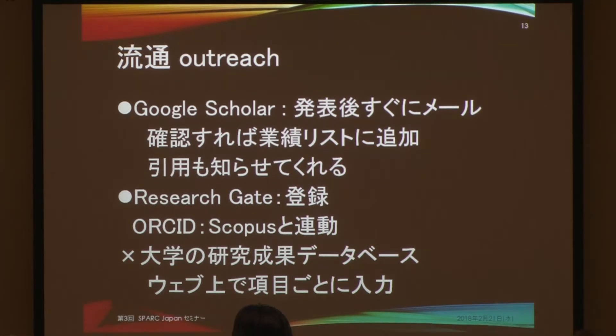Outreach — researchers traditionally have not been really aware of the necessity of outreach. I register myself on Google Scholar. When I publish a scientific article, within about a week I receive an email from Google; I just press yes. When my article is cited, I am quickly notified. If I register on ResearchGate, I will be contacted saying someone has read my article. Traditionally it was not easy to know how people were actually reading my articles.